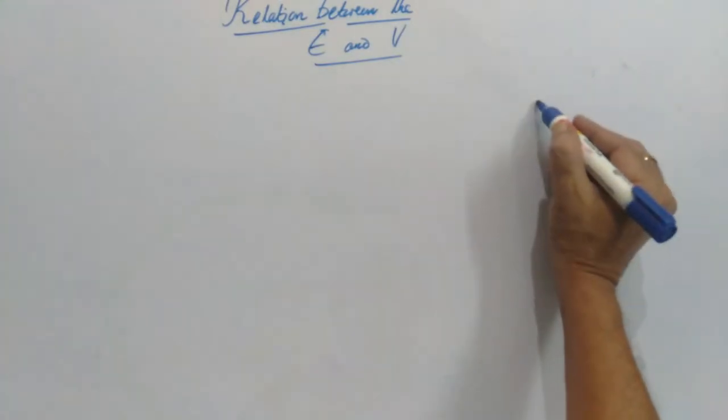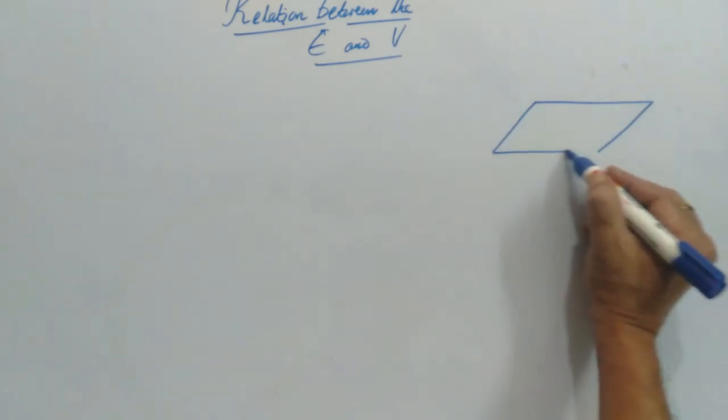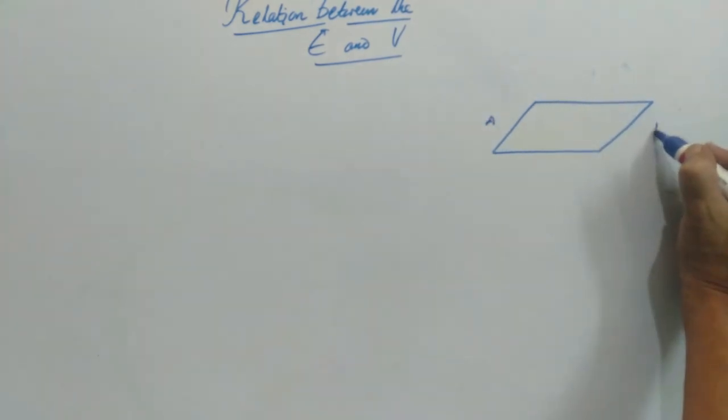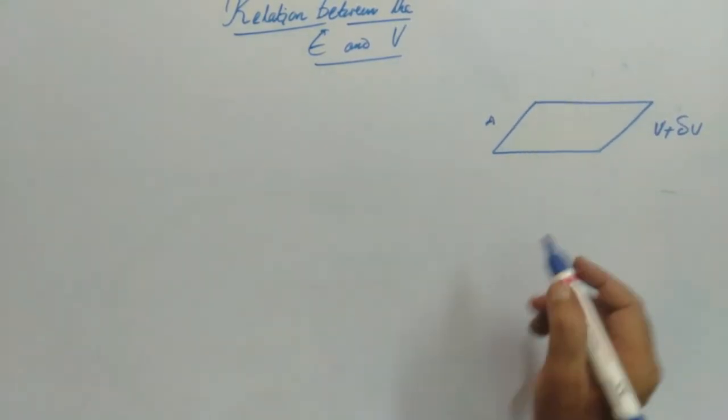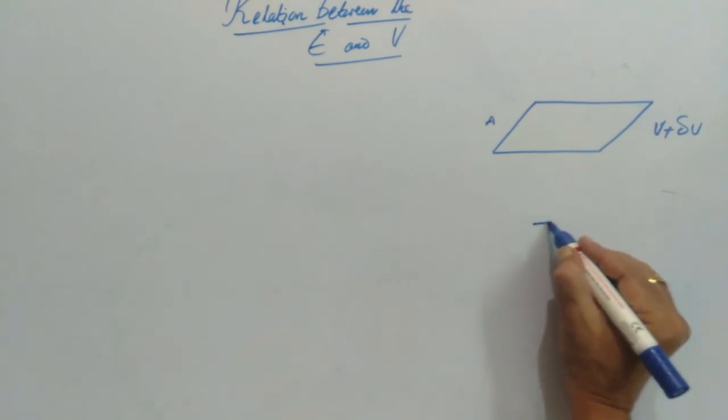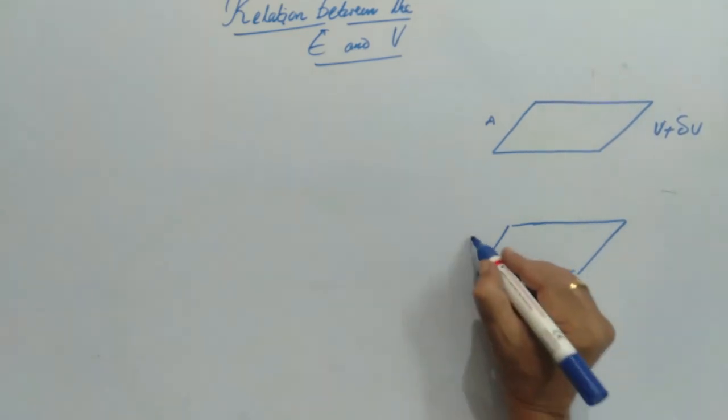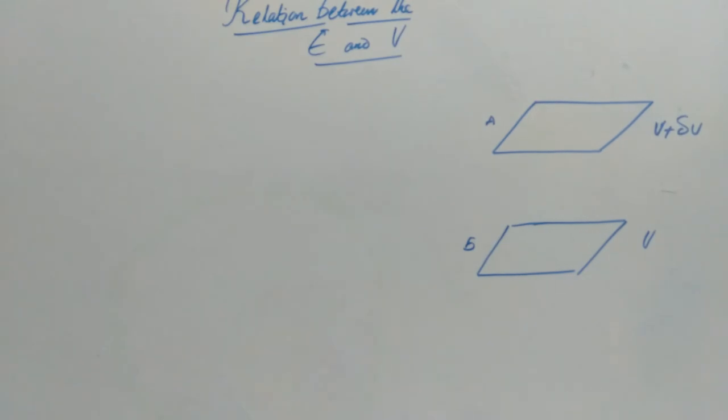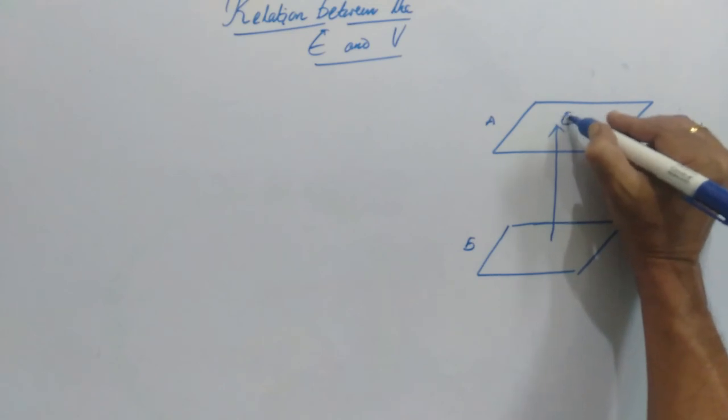To find the relation, let us take two equipotential surfaces. Let this be at a potential V plus delta V, another equipotential surface at potential V. If the electric field is in this direction,